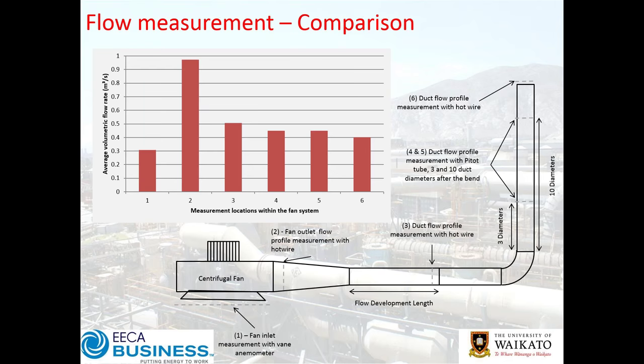Measurement 2 at the fan outlet with the hot wire quite substantially overestimates the true flow rate. The reason is that the hot wire picks up all velocity components — not just the axial component but also in-plane velocity components associated with the fan's momentum. With good duct design, this gets recovered as static pressure further down the duct. Generally when taking measurements immediately after the fan with a hot wire, you will overcompensate and record a higher velocity. In practice 20–30% overshoot is quite common; in this severe example it's nearly double.